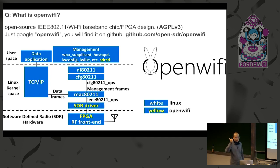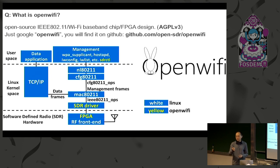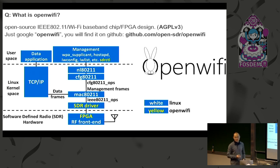If you go to our demo, you can use your cell phone to connect to the Linux running over the chip, with host APD and a web server. You can access it just like you access a commercial Wi-Fi router.